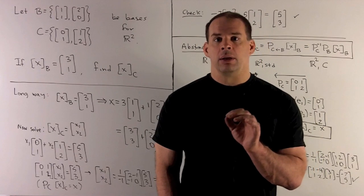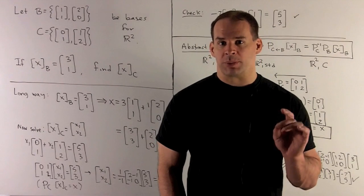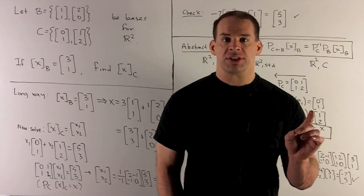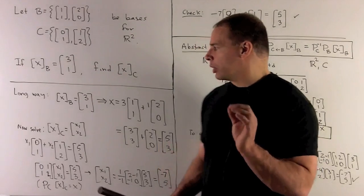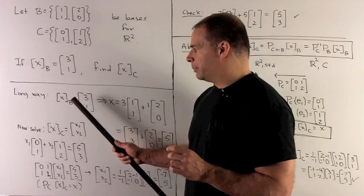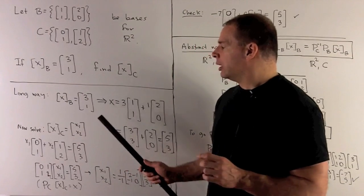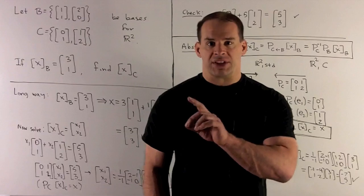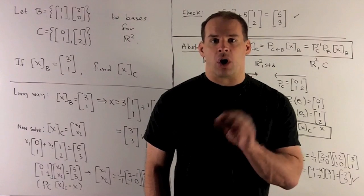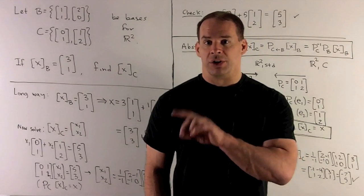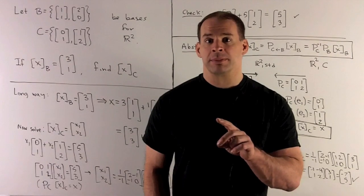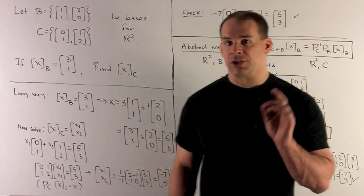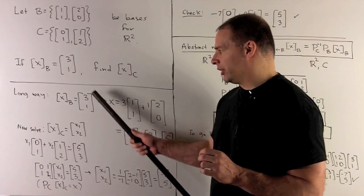Now, what do we mean by a coordinate vector with respect to a basis? So for instance, if I have coordinate vector for X with respect to B equal to [3,1], what this vector here is telling me, if I have a basis, then any vector in R2 can be written as a linear combination of elements of the basis. For this, our coordinate vector is going to tell us how to construct the linear combination.